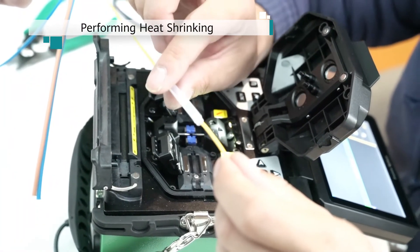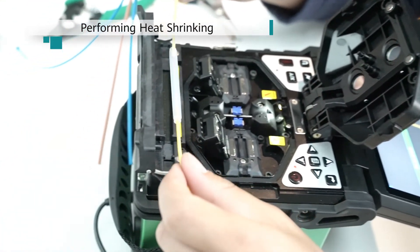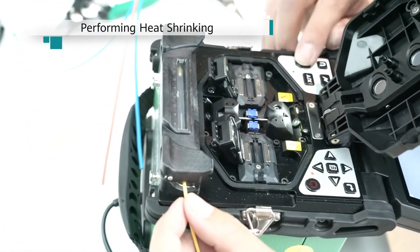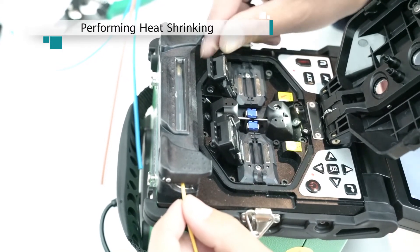Slowly cover the splicing points and bare fiber using the heat shrink tubing. Secure the heat shrink tubing to the heat shrink trough and start heating it. When heat shrinking is complete, remove the spliced optical fiber.